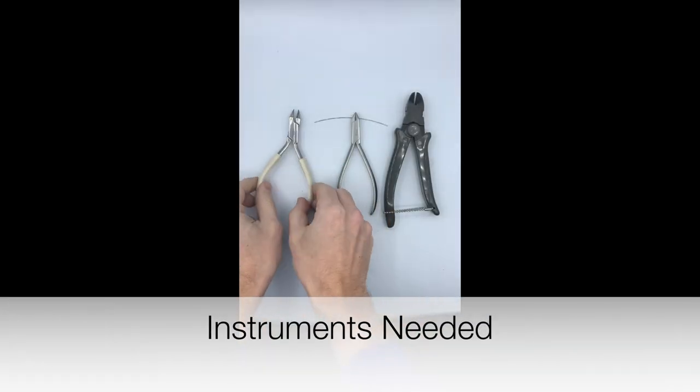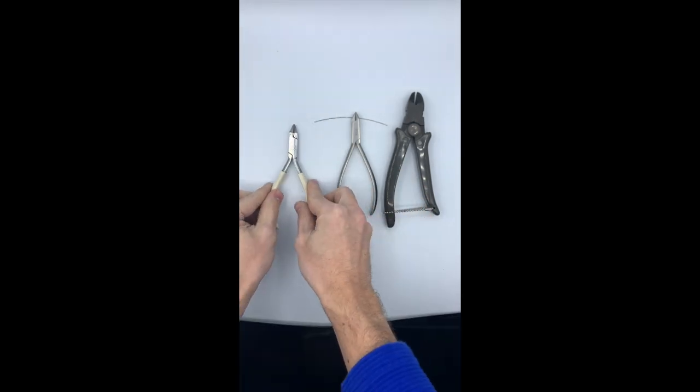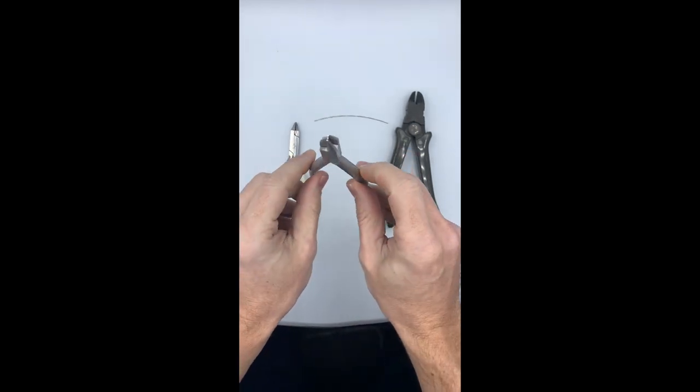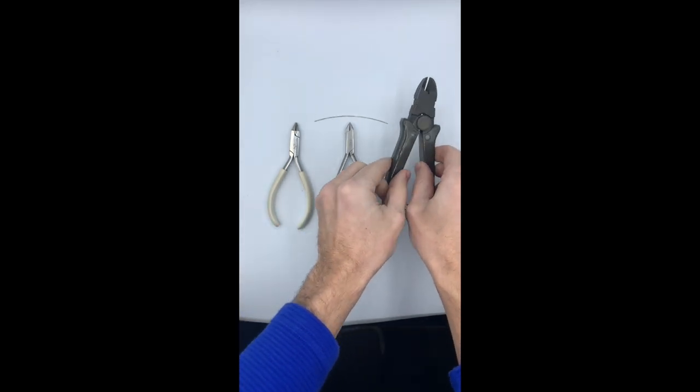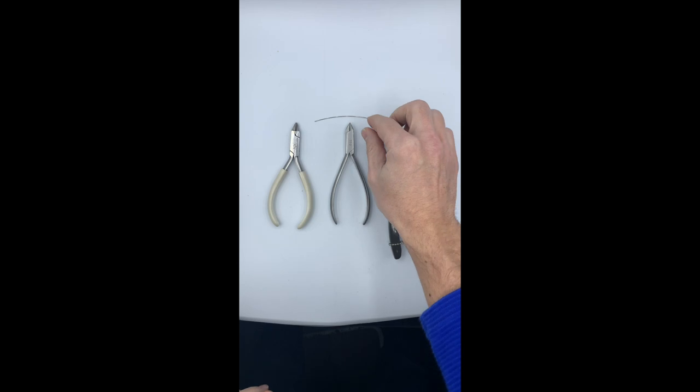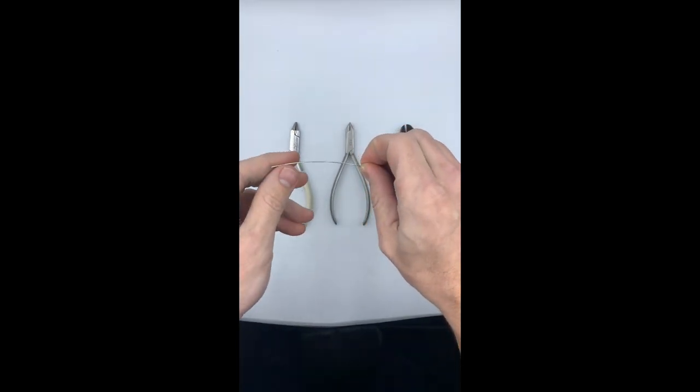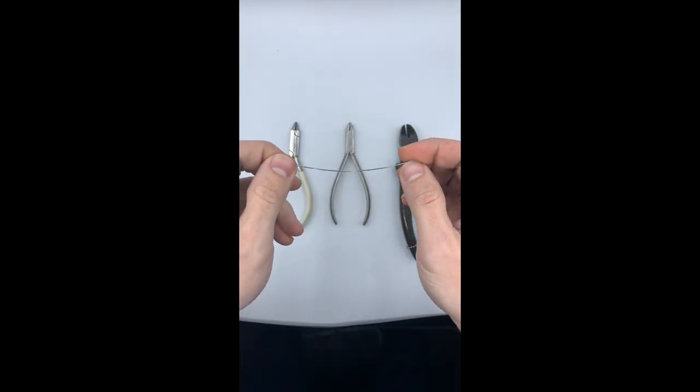The instruments needed: a 139 plier, a 3 prong plier, a wire cutter, and a 3 inch length of 036 wire.